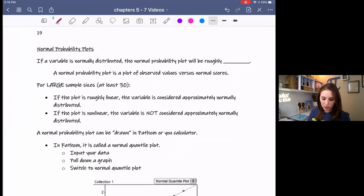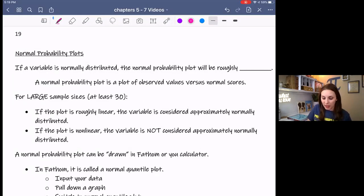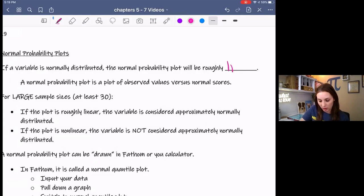So it is pretty neat. I love using these to assess normality. I think you will too. So if a variable is normally distributed, the normal probability plot will be roughly linear. So we're going to sketch this normal probability plot and if it's roughly linear then the variable is normally distributed. So that's why I mentioned you can use it to assess normality of a variable.